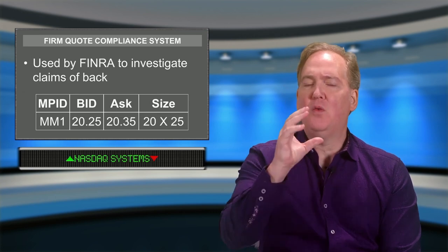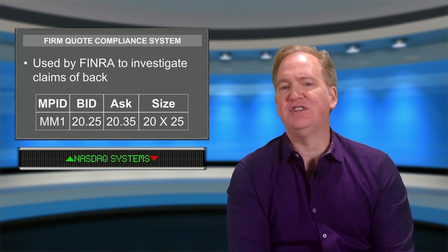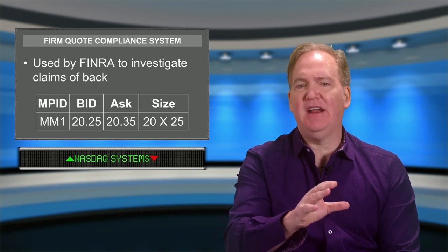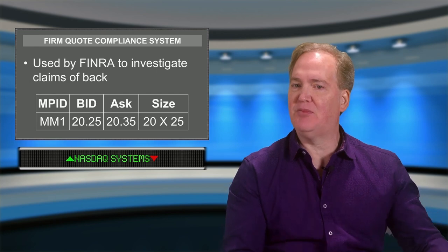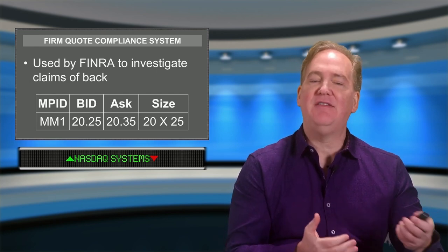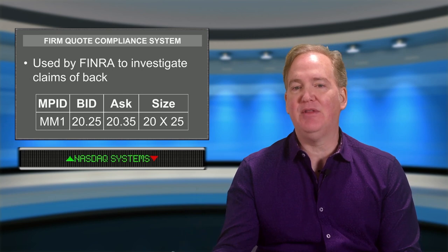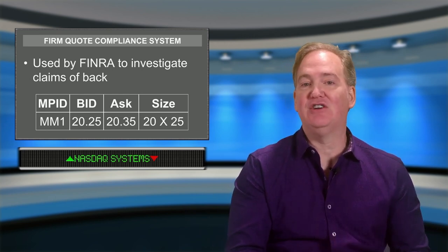FINRA will use the firm quote compliance system to look at exactly the timing of all events: when the quote was displayed, when the order was presented, and whether the market maker had just updated its quote because it executed a prior order. If a market maker updates its quote because it executed a prior transaction, a firm quote violation will not have taken place. If the market maker simply moved their quote without having effected a transaction, the market maker will have backed away and violated FINRA's firm quote policies.